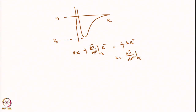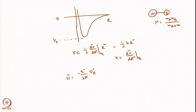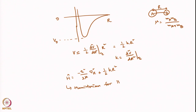Now writing the total energy Hamiltonian: H equals −ℏ²/(2μ) (∂²/∂r²) plus ½kr², where for a diatomic AB, μ is the reduced mass mA·mB/(mA + mB), and r is the internal coordinate. This is the Hamiltonian for the harmonic oscillator.